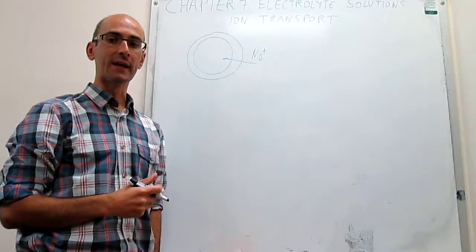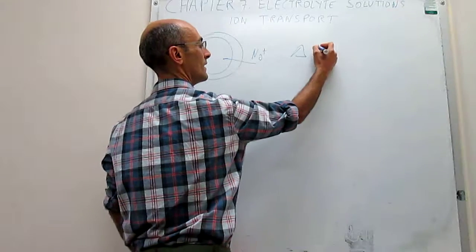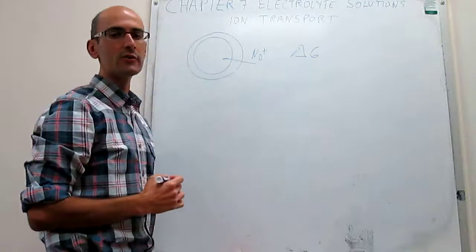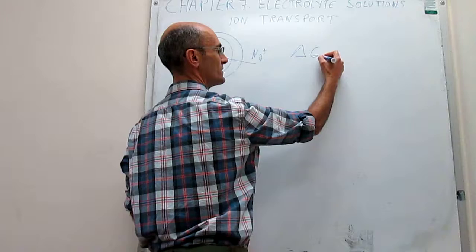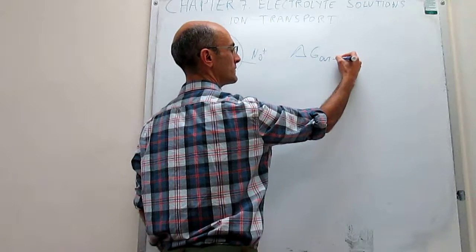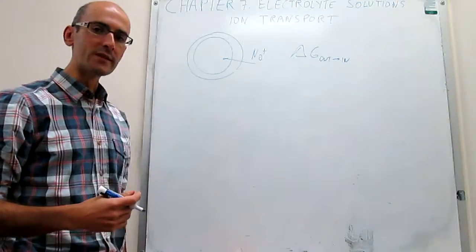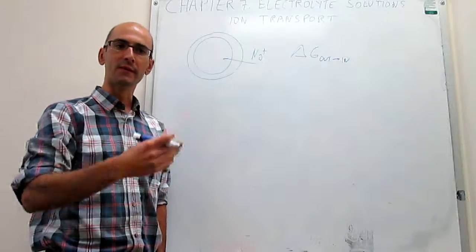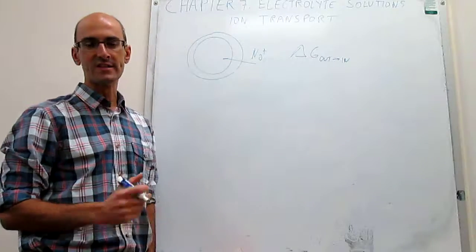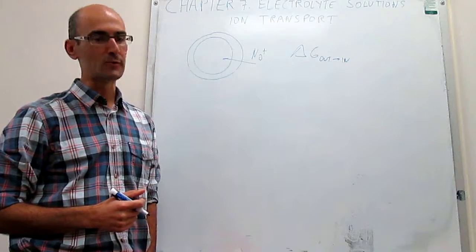In the end we are going to be calculating this with the change in Gibbs energy for the transport, which we are going to consider is always from the outside to the inside. If you are interested in the transport from the inside to the outside, then you can proceed this way and then change the sign at the end, because the Gibbs energy is a state function.